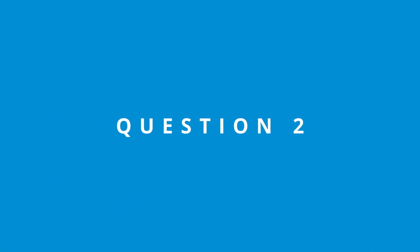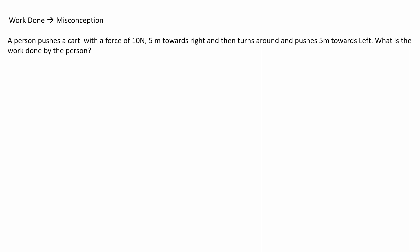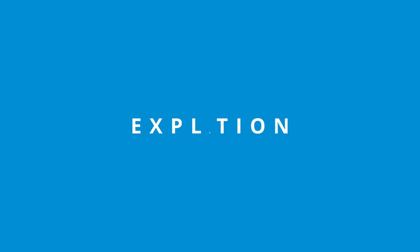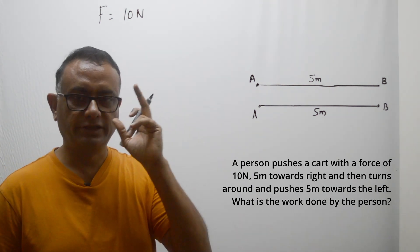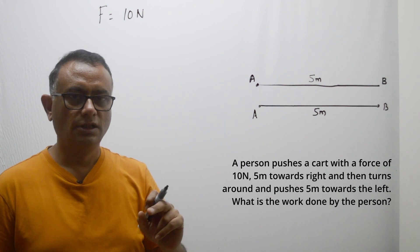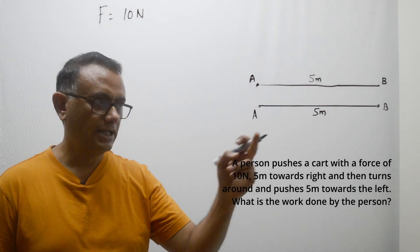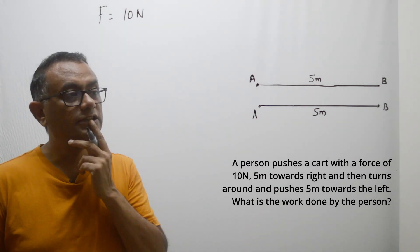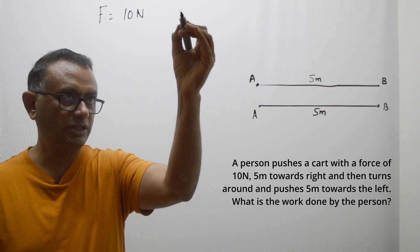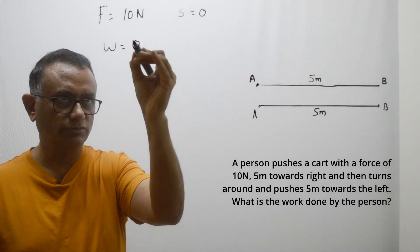The next numerical: a person pushes a cart with a force of 10 newtons, 5 meters towards the right, then turns around and pushes it 5 meters towards the left. We need to find the work done. The person travels from A to B a distance of 5 meters, then turns back and returns to A, again traveling 5 meters. The common misconception is: since the person went from A to B and back to A, displacement is zero, therefore work done is zero.